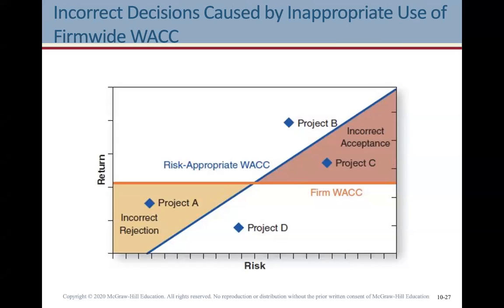The pink shaded triangle contains project C, which is incorrectly accepted — it has greater risk than the firm's average, its expected return is less than a correctly calculated risk-appropriate WACC, but greater than the inappropriately calculated firm-wide WACC. You can see how decisions get complicated quickly. If WACC is inappropriately calculated, project A gets rejected when it shouldn't, and project C gets accepted when it shouldn't.